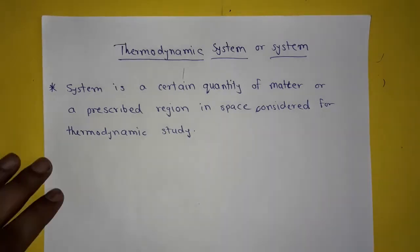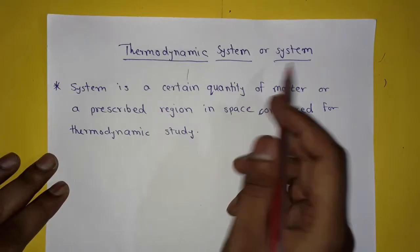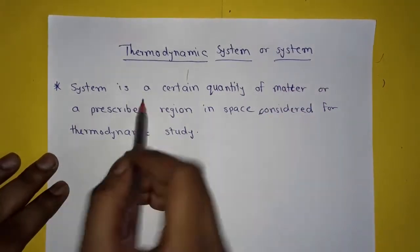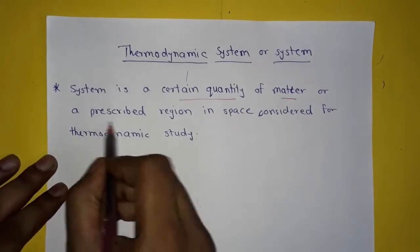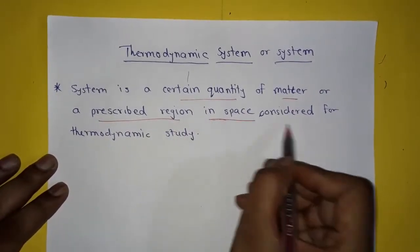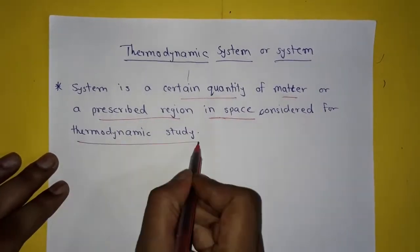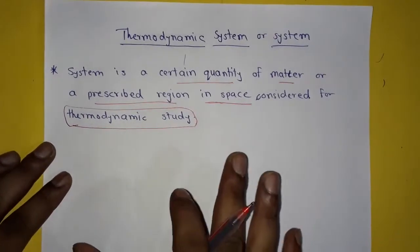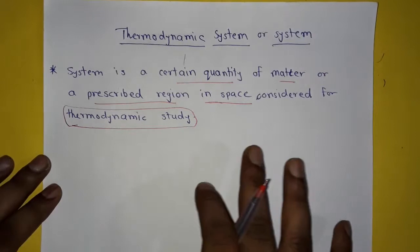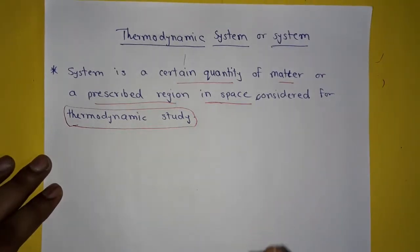Now we will see what is thermodynamic system, surroundings, boundary, and universe. Thermodynamic system, or simply a system, is a certain quantity of matter or prescribed region in space considered for thermodynamic study. That is, the part or quantity of something which we select for our thermodynamic study or analysis or experiments is called system.